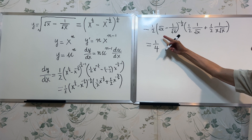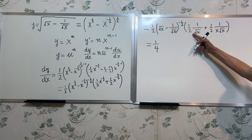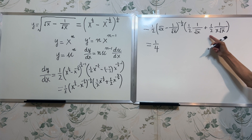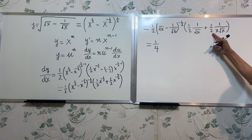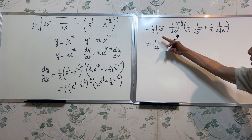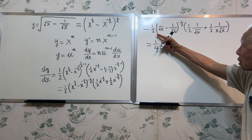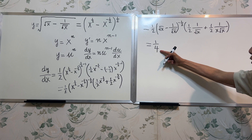Notice that there is one-half here, one-half here, and one-half here. These two one-halves could be factored out and multiplied by the one-half in the front, giving one-quarter.